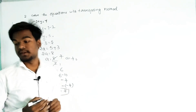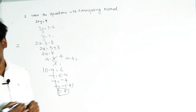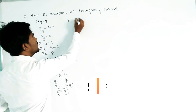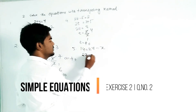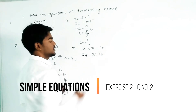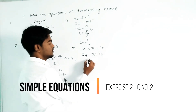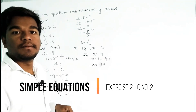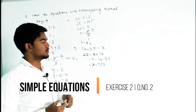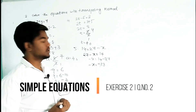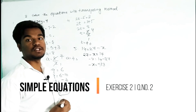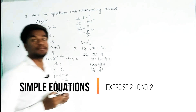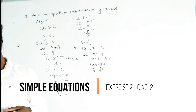Our fourth question: 7 minus x equals 14. Shift 7 to the right side: minus x equals 14 minus 7, so minus x equals 7. Removing the minus by transposing it to the right side, the minus signs cancel and x equals minus 7.